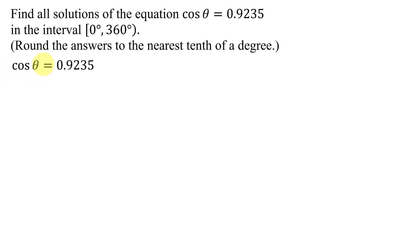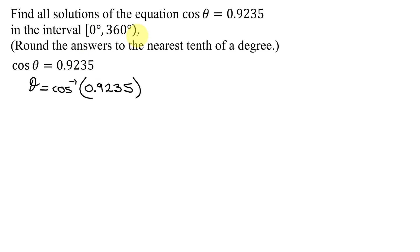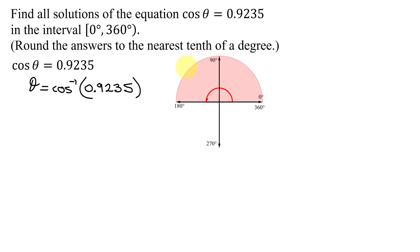How do I undo the cosine function? Theta is going to equal the inverse cosine, or the arc cosine, of 0.9235. Now remember, the equation cosine of theta equals 0.9235 has an infinite number of solutions, but I just need to find the solutions in the interval 0 to 360 degrees. However, the equation theta equals the inverse cosine of 0.9235 only has one solution. By definition, the solution must lie between 0 and 180 degrees, somewhere in either quadrant 1 or quadrant 2.